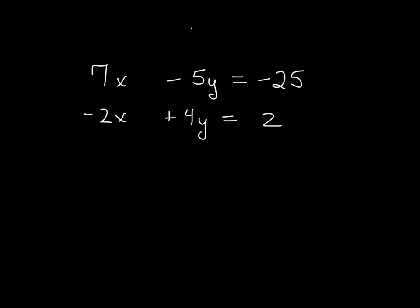We're going to do more systems of equation questions. When we're looking at these, you can see there's nothing in common between the coefficients of x, 7 and 2, same thing with the coefficients of y, 5 and 4. So we have two choices.